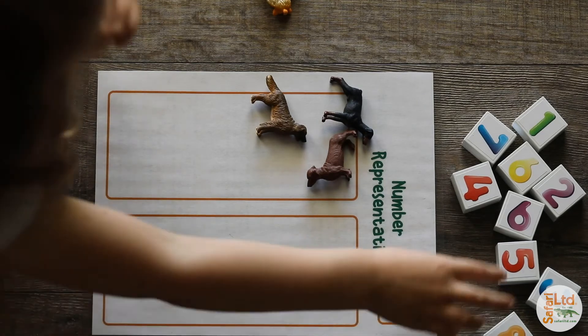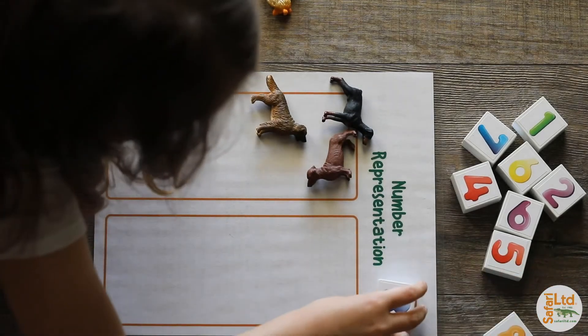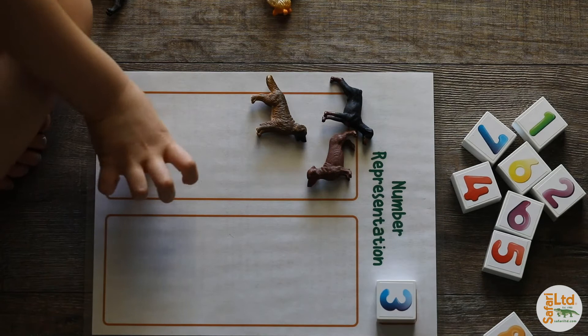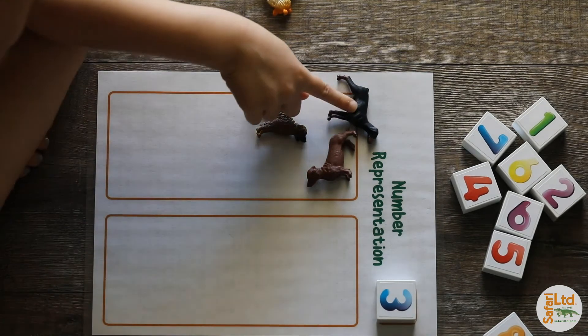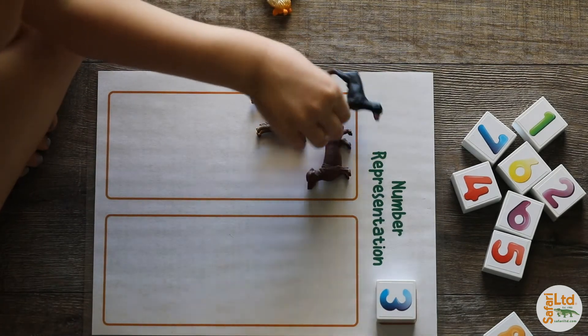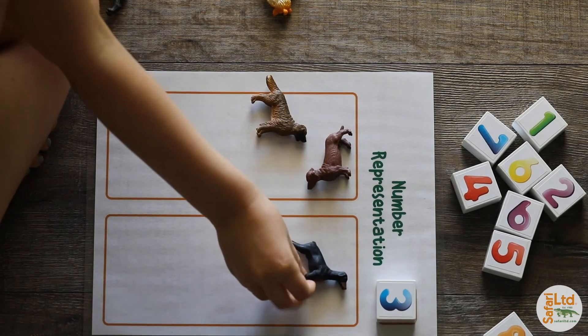She then practices number bonds and breaks apart the number three by dragging one dog over to the second box. This helps her visualize a simple addition problem where one plus two equals three.